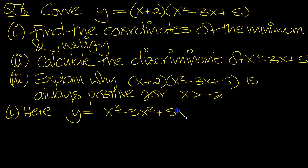And then run the 2 through them all. Plus 2x squared, minus 6x's, plus 10. So y is equal to x cubed minus 3 plus 2 is minus x squared, 5 minus 6 is minus x, plus 10.